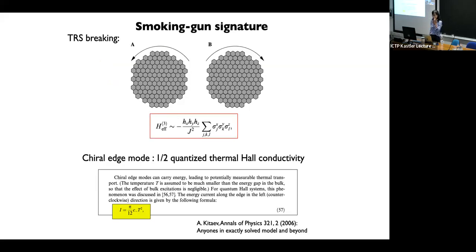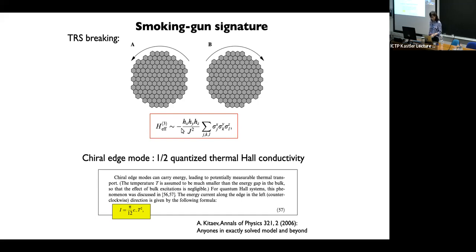The smoking-gun experimental signature—also from Kitaev's original paper—is going to be the half-integer quantized thermal Hall conductivity. He showed this using a time-reversal-symmetry-breaking Hamiltonian: H_x H_y H_z. I want to point out that this one is not a gapped field, but you are breaking it by putting time-reversal symmetry breaking in. So that's one thing I'll come back to.